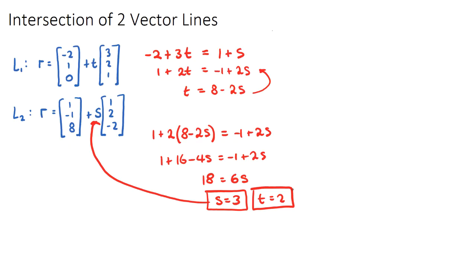If I instead sub t equals 2 into its equation and work our way across, we would actually get the same resultant. Of course, because that's the point where they intersect. So if I sub s equals 3 into L2, I know that I'm going to get 1, negative 1, 8, plus, now instead of s I'm going to put 3, and it will be 1, 2, negative 2. I'll now have a resultant answer, so 1 plus 3 times 1, so it'll be 4, negative 1 plus 3 times 2, so it'll be negative 1 plus 6 is 5, and then 8 and then we subtract 6, so it'll be 2.